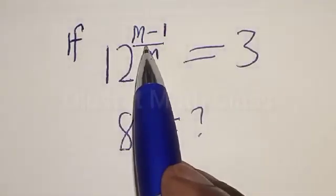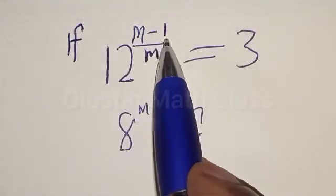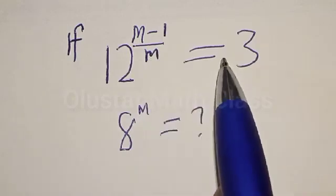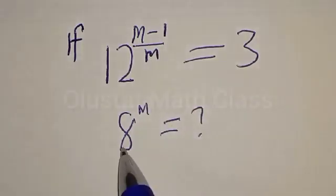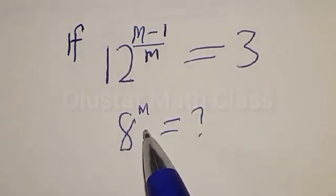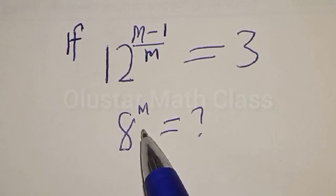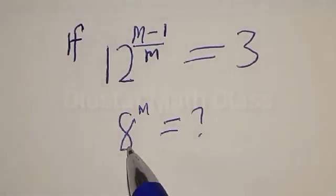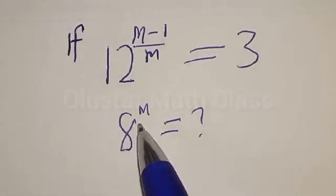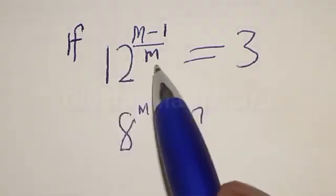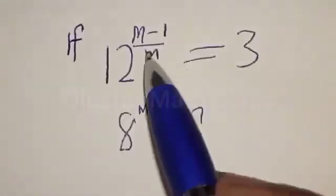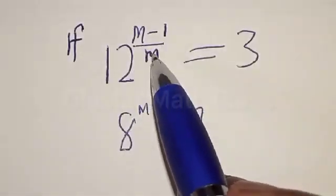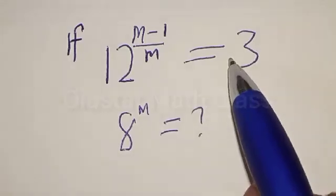If 12 raised to power m minus 1 divided by m is equal to 3, what is the value of 8 raised to power m? Hi everyone, welcome to my class. In today's class, we want to quickly find the value of 8 raised to power m from this given exponential equation: 12 raised to power m minus 1 divided by m is equal to 3.